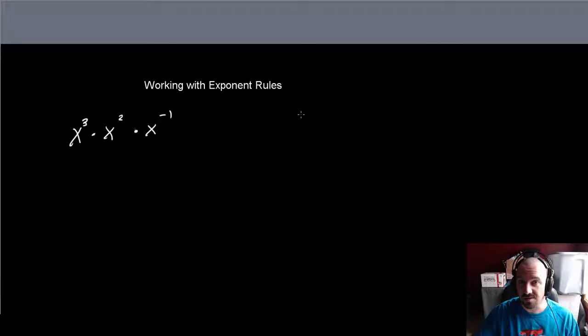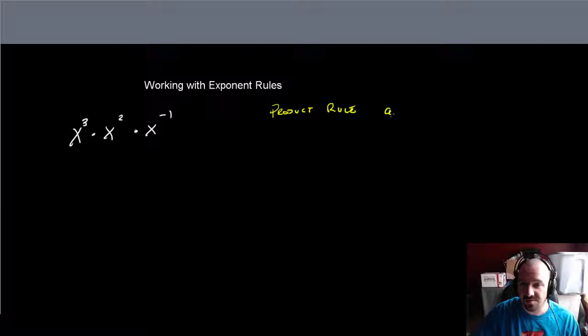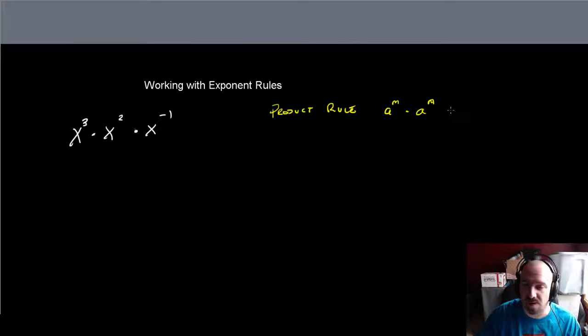Now the first example here is a classic example of the product rule. The product rule simply states that if you have two things with the same base, assuming that a is not zero, if you have something with the same base but perhaps different exponents, then you just simply add the exponents when you multiply them.